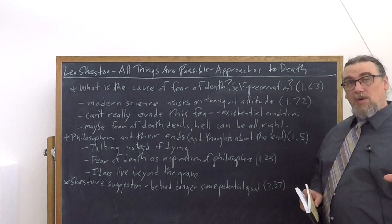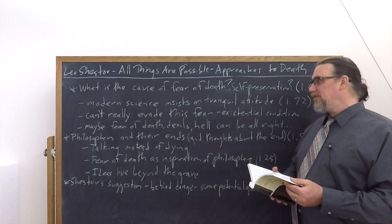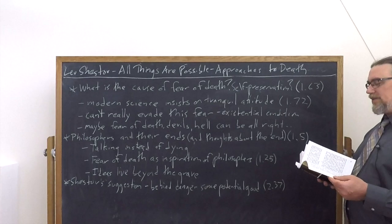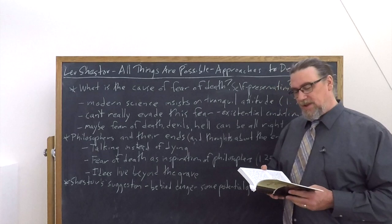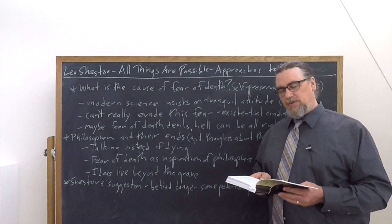He says, Schopenhauer asserts death-inspired philosophy, all the best poetry, the wonderful mythology of the ancients and modern people have for their source the fear of death. Only modern science forbids people to fear and insists on a tranquil attitude towards death. We could also add into that certain philosophies that denigrated the fear of death, Epicureanism, Stoicism. These are philosophies that could also be lumped in there with modern science in saying, don't worry about this sort of thing.